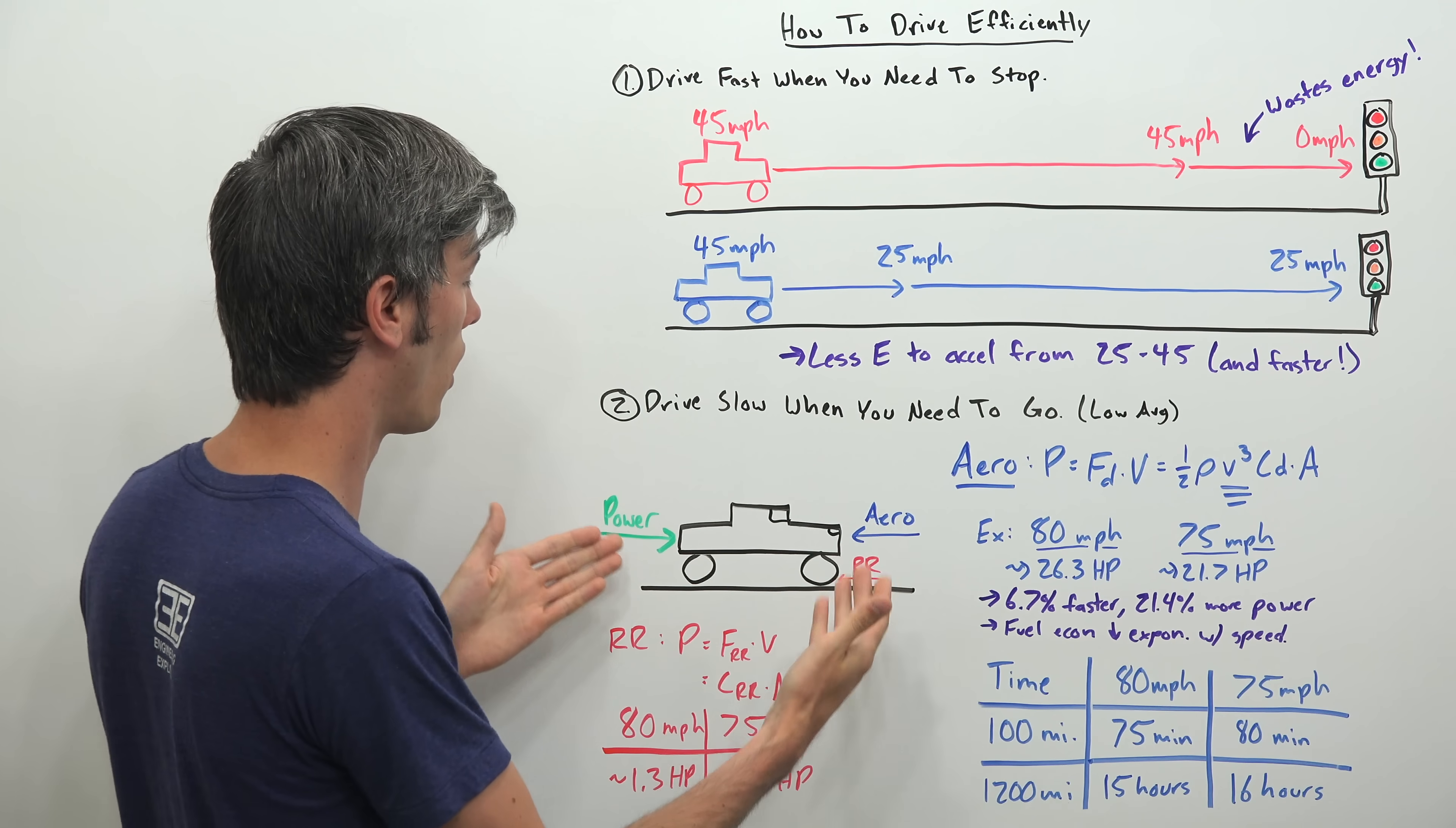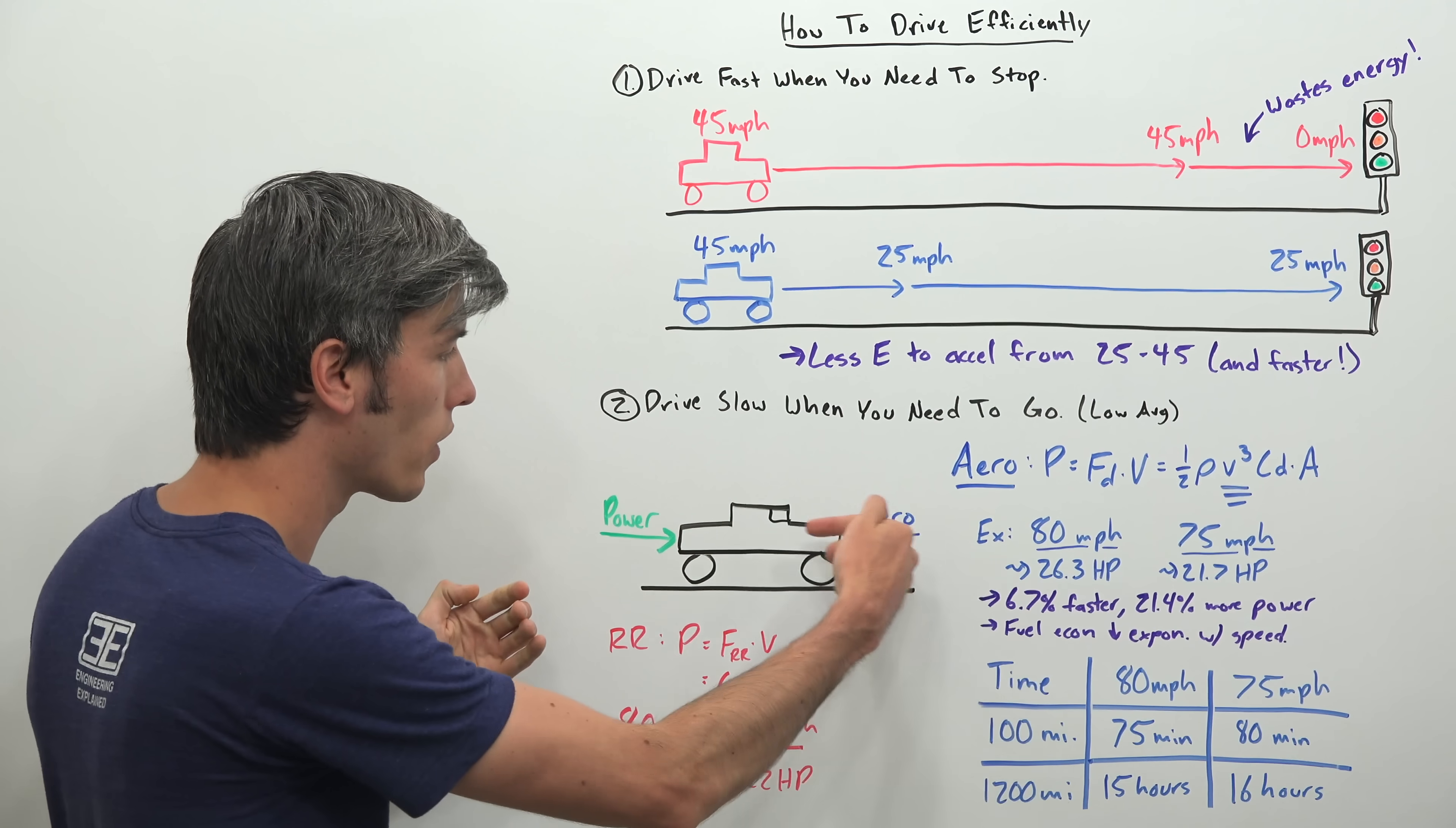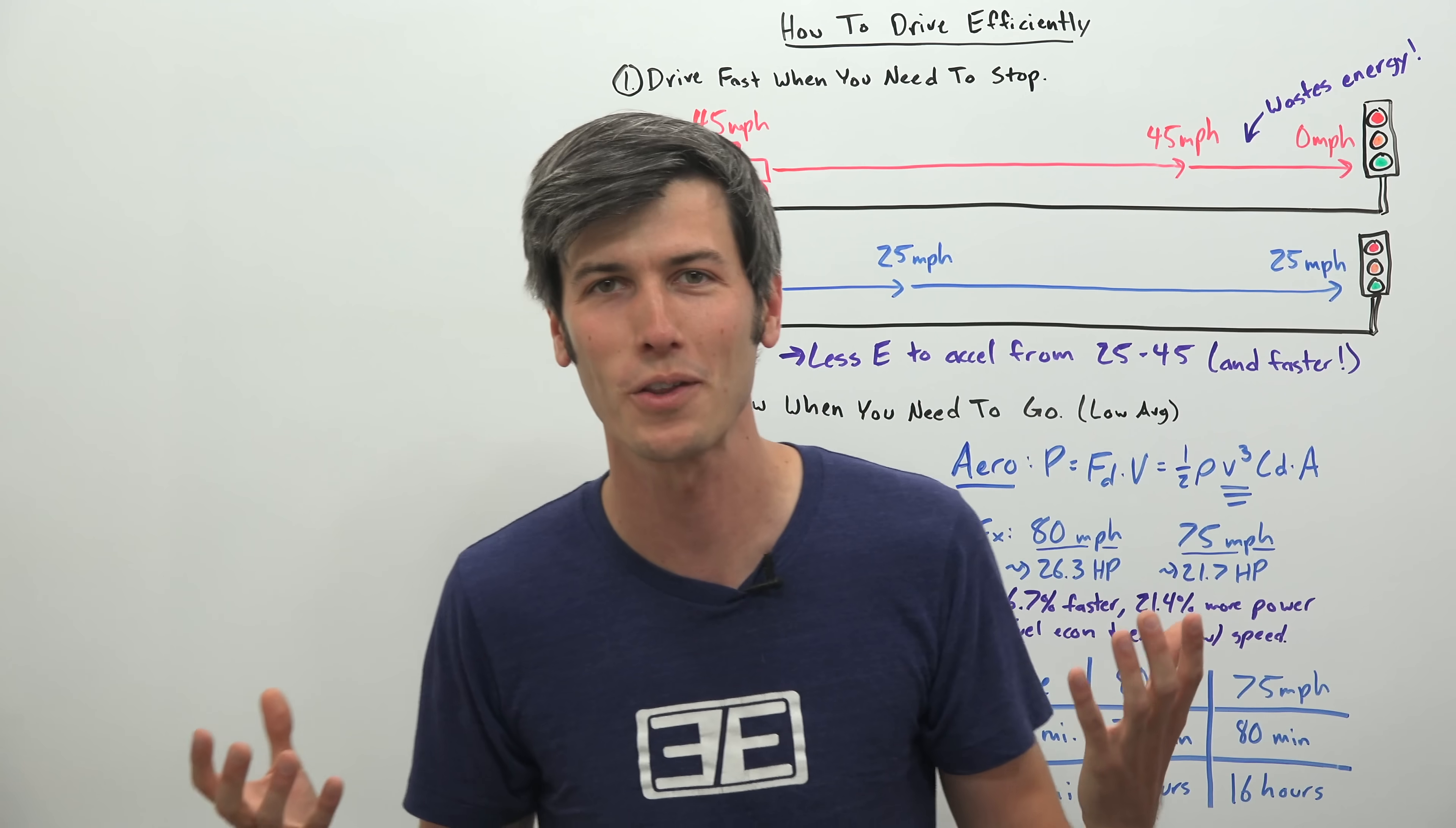So as you're driving along on the highway, the amount of power that you need to produce has to equal the resistive forces that you have. So you have aerodynamic drag going against your vehicle and you have rolling resistance in the tires. Now looking at aerodynamic drag, the amount of power that you need to overcome it is equal to the force of that aerodynamic drag multiplied by the velocity of your vehicle. And within the equation for the force of aerodynamic drag, you have velocity squared. So you multiply that by velocity again, you then have velocity cubed for the power needed to overcome aerodynamic drag.